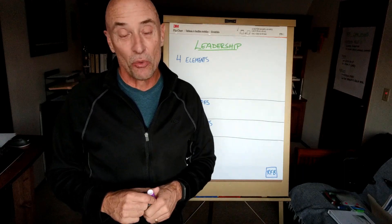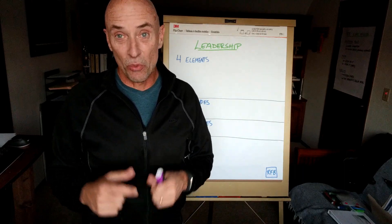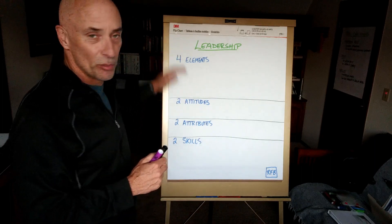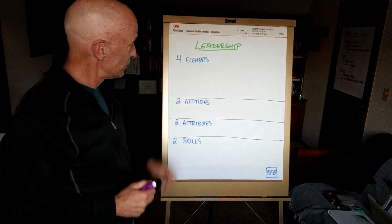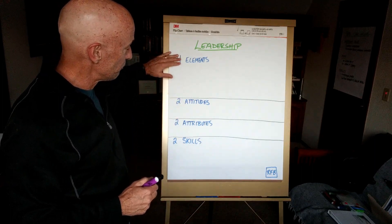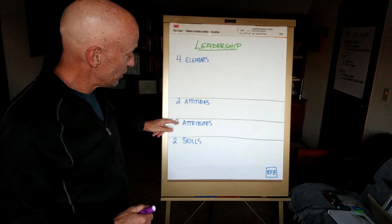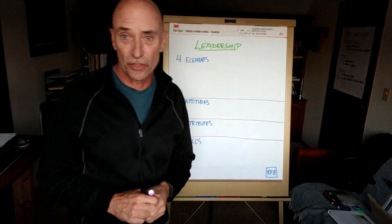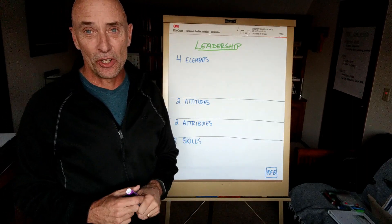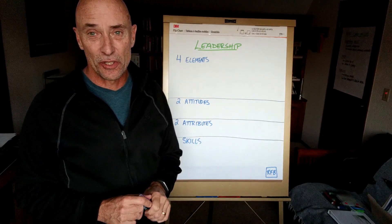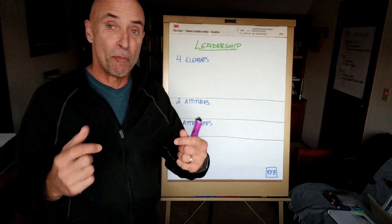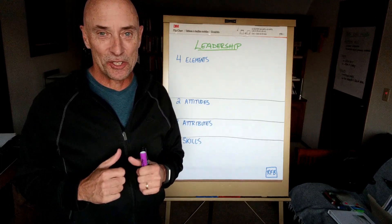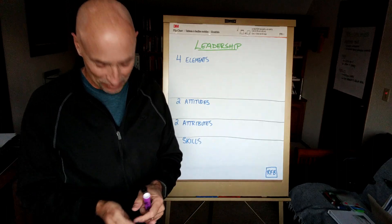Today we're going to walk through what I believe are the essential pieces of leadership. It comes down to four elements, two attitudes, two attributes, and two skills — very discrete pieces that all go together to form my sense of what's involved in leadership. Let's get started.